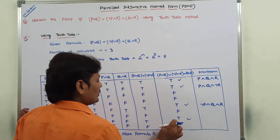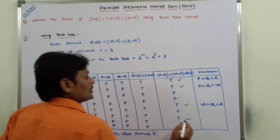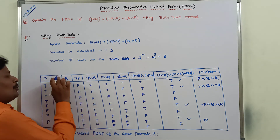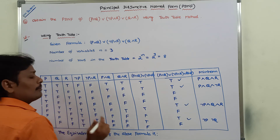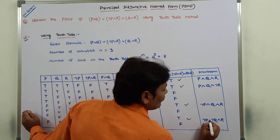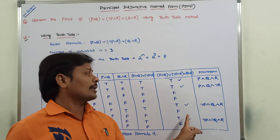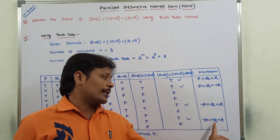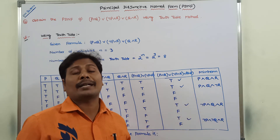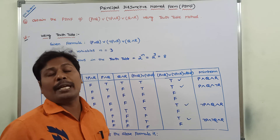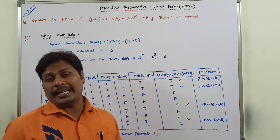For the seventh row, the corresponding truth values are P=false, Q=false, R=true. So I write ¬P∧¬Q∧R, with AND connective between them. There are four true values in total, and I write the corresponding min terms. These min terms are then connected using the OR connective, giving the disjunction of min terms, which is nothing but the PDNF.